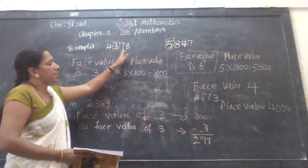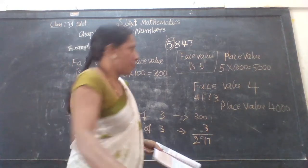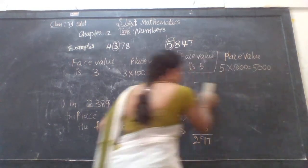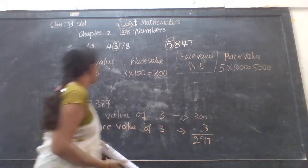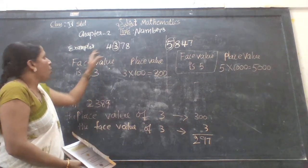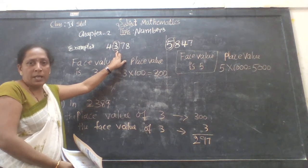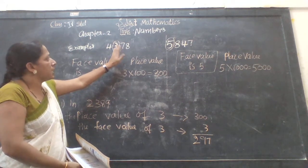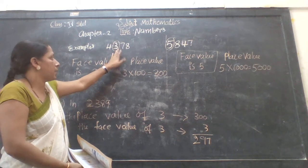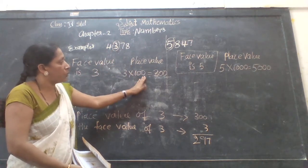They have given the example 4,378. I have circled the number 3. Which place is this? It is the hundreds place. So the place value of 3 becomes 3 × 100 = 300.